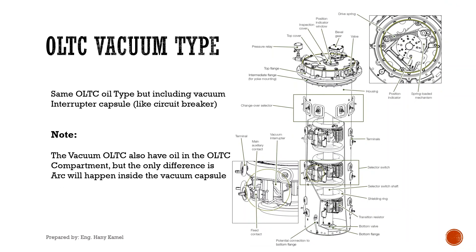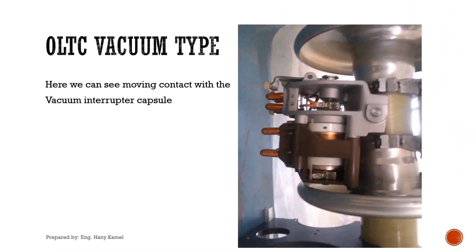OLTC vacuum type. As we can see in the picture, the OLTC vacuum type is the same as the OLTC oil type, but includes a vacuum interrupter capsule like a vacuum circuit breaker. Very important note: the vacuum OLTC also has oil in the OLTC compartment, but the only difference is that the arc will happen inside the vacuum capsule. In this picture we can see the moving contacts and the vacuum interrupter capsule — the white color part.